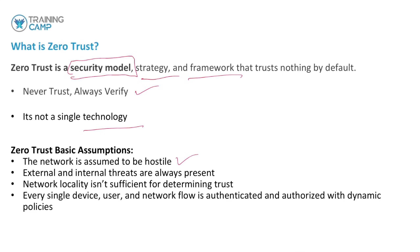Network locality isn't sufficient for determining trust. Just because you're in a department, on that floor, and physically located together — which is pretty rare today — we don't trust you. We don't trust anything you do on that local network, let alone outside of it. Every single device, user, and network flow is authenticated, and we authorize them with dynamic policies that change on the fly.